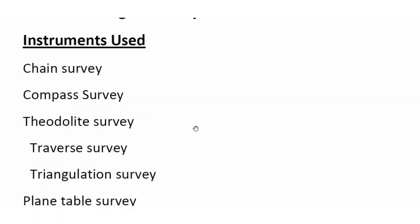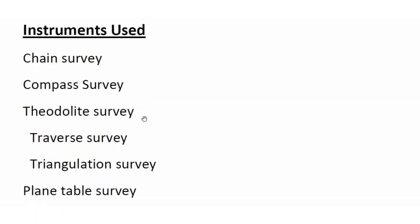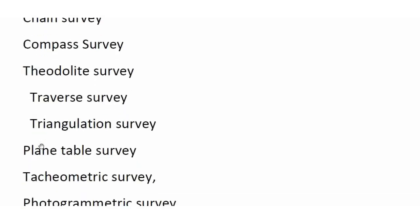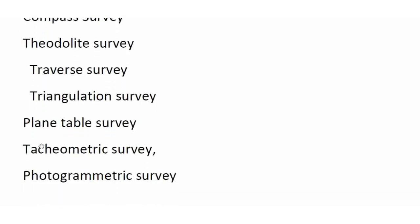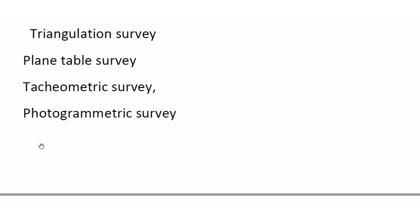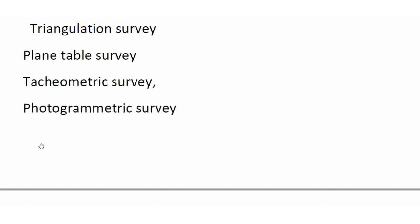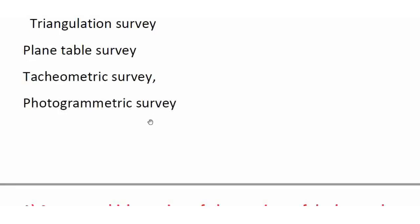Classification by instrument: chain surveying uses linear measurement of distance; compass surveying measures direction and angle; theodolite surveying measures horizontal and vertical angles. Traverse and triangulation surveying are methods of surveying not based on a single instrument. Plane table surveying combines both field work and office work. Tachometric surveying is associated with the theodolite. Photography-based method is also used.